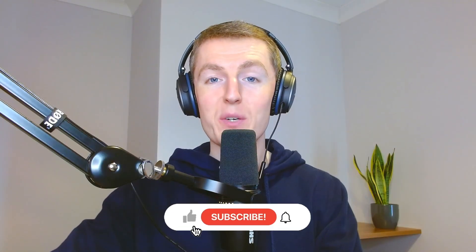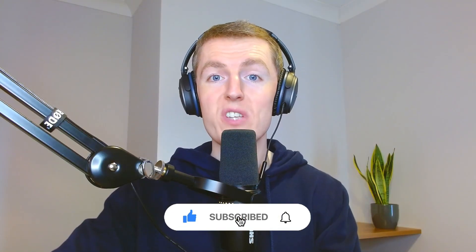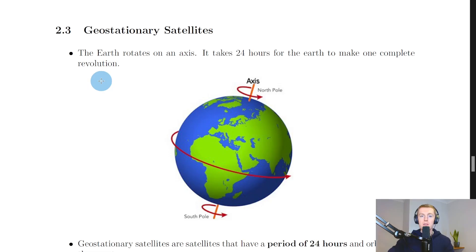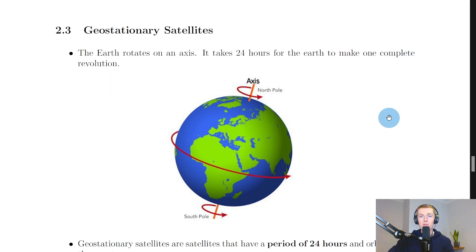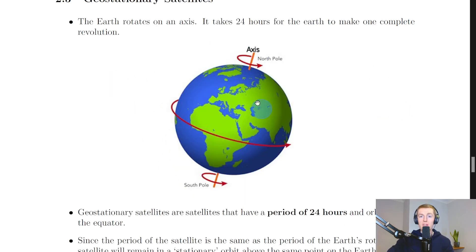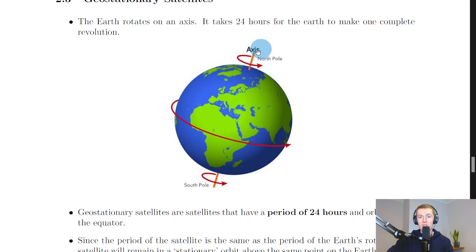Welcome back. In this video we're going to go over geostationary satellites. The earth rotates on an axis — it takes 24 hours for the earth to make one complete revolution, and that's why one day is 24 hours in length. You can see in the picture that the earth is tilted on its axis at about 23 degrees to the vertical, with the north pole, south pole, and equator highlighted.